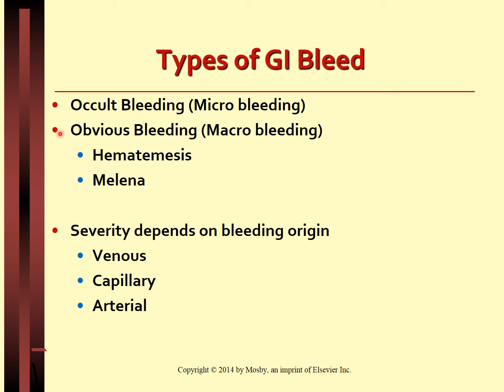The longer the passage of blood through the intestines, the darker the stool color, due to breakdown of hemoglobin and release of iron. Coffee ground vomitus indicates blood has been in the stomach for some time. The severity of GI bleeding depends on whether the origin is venous, capillary, or arterial. Bleeding from an arterial source is profuse and bright red, indicating the blood has not contacted gastric hydrochloric acid. Bleeding is also characterized as acute or insidious in onset.